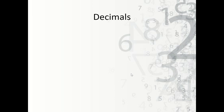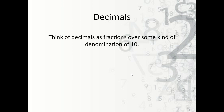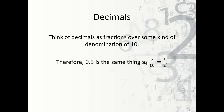Now how do I work with decimals? Think of decimals as fractions over some denomination of ten. For instance, 0.5 is the same thing as five over ten. For every number after the decimal point, I include a zero — so it's one and then one zero — because there's one value. So it's five over ten, which in this case simplifies to one half.